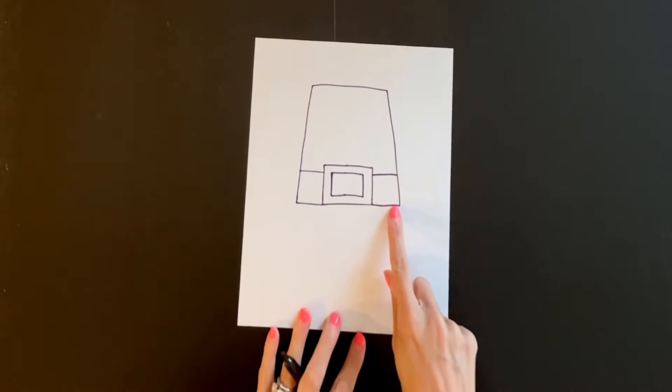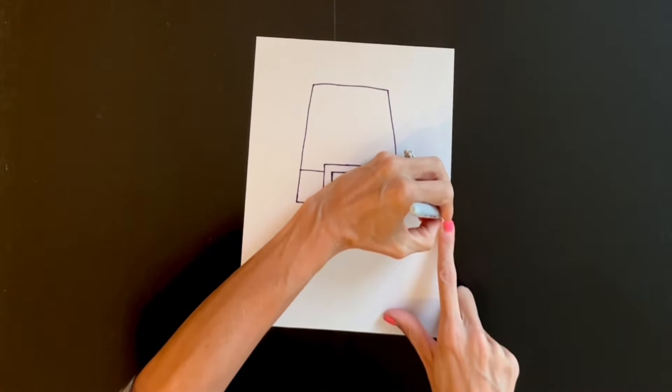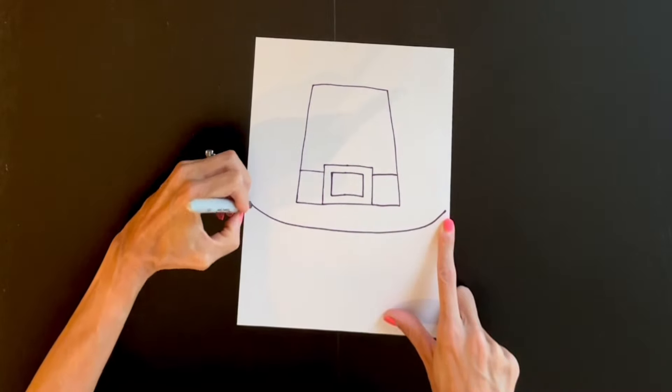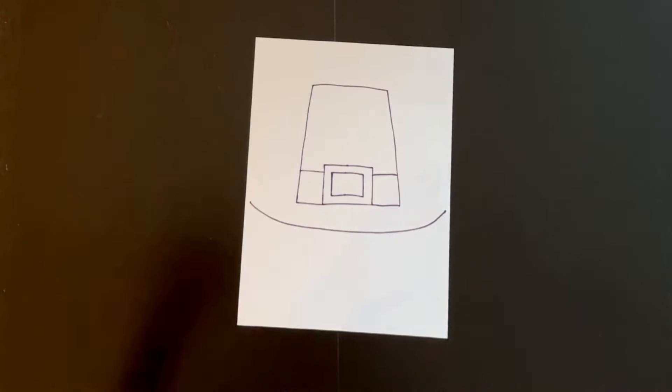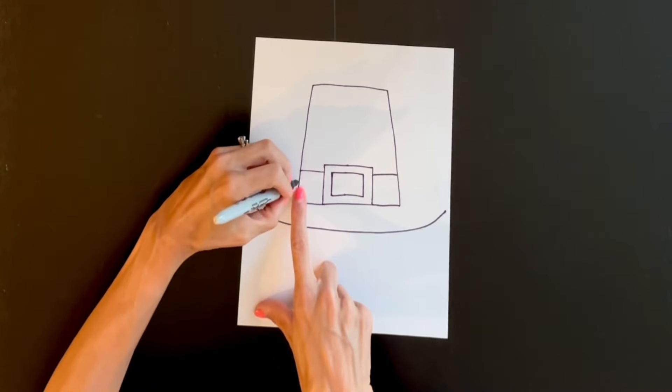Next I want to come out from here and come almost to the edge of my paper and I'm going to draw a nice long U all the way to the other side, coming down just below that line right there.